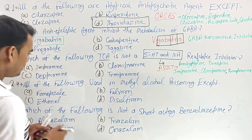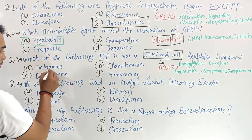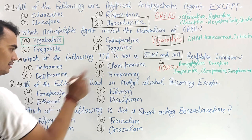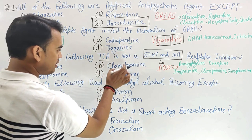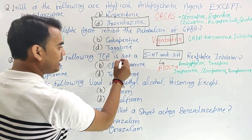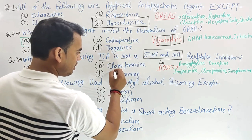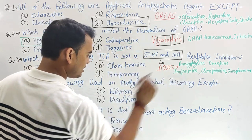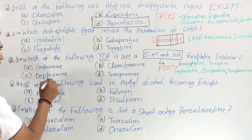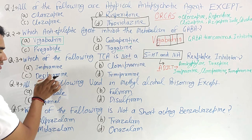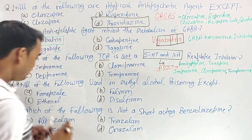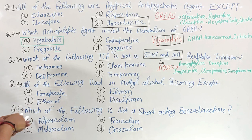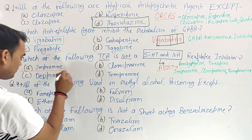Now check the options. Imipramine — yes, it's there. Clomipramine — yes, present. Desipramine — no, this one is not there in the ADDICT list. Trimipramine — also present. So our right answer is desipramine, as it is not a 5-HT and noradrenaline reuptake inhibitor.